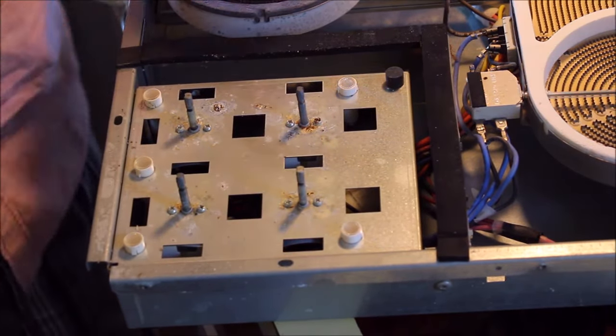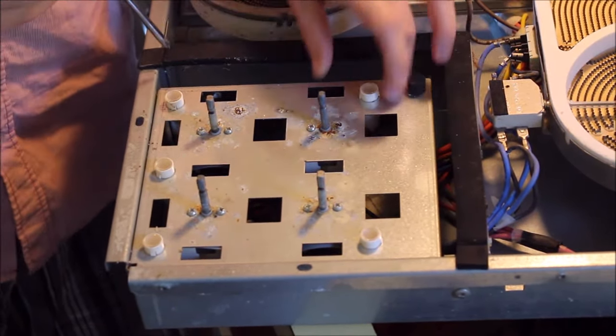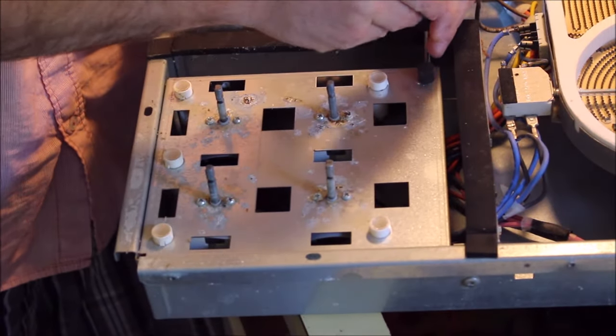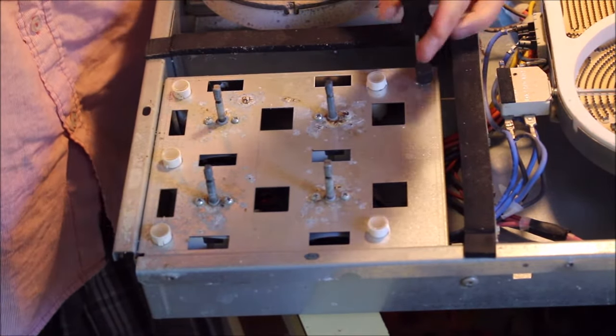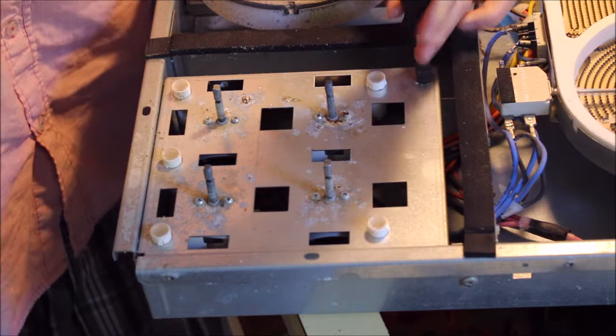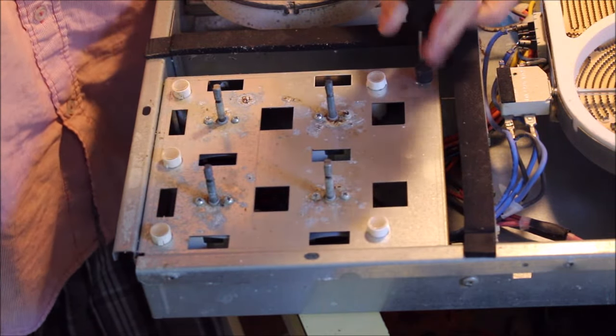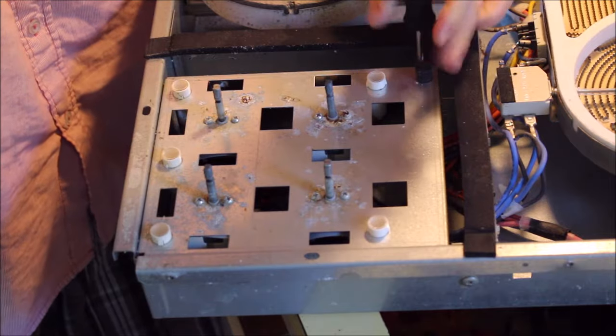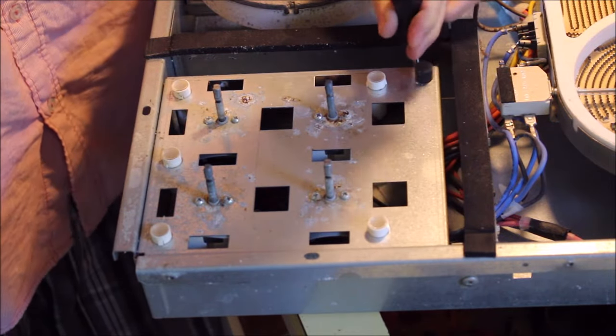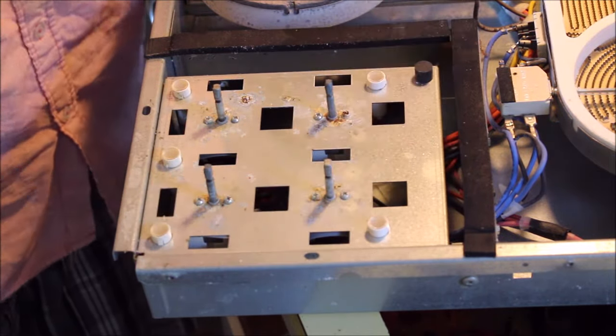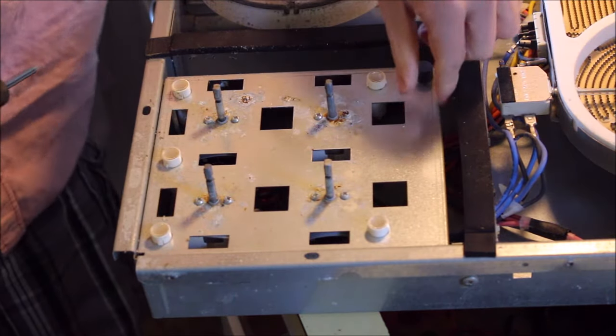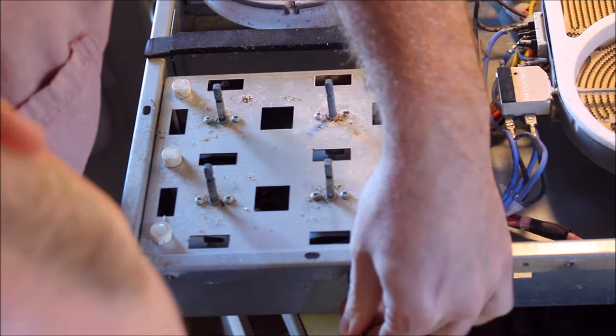Now we're going to take apart the switch cover assembly. Pull off the cover so we can get access to the switches. There's two screws on this one. One that's into the bottom, mounted into the bottom of the cooktop.